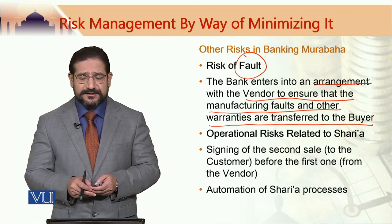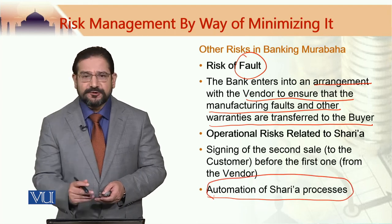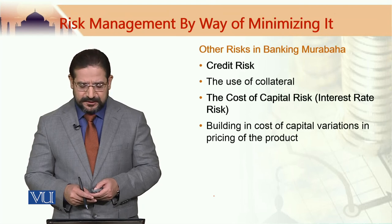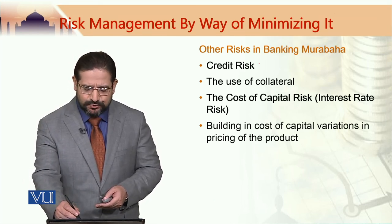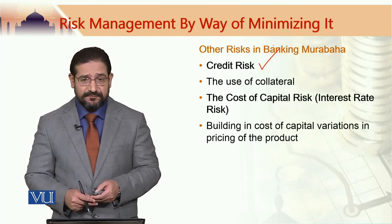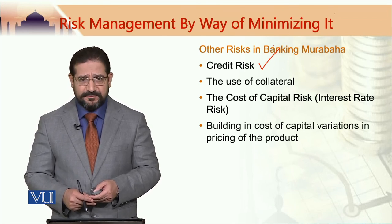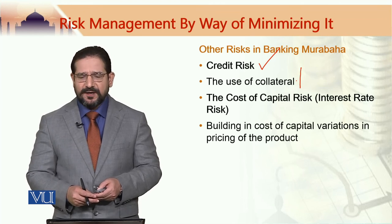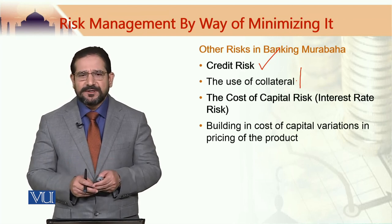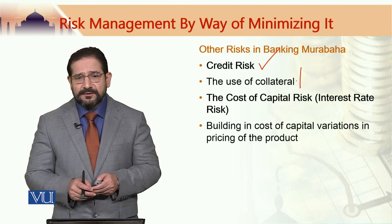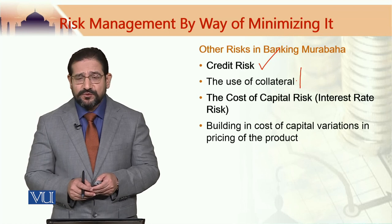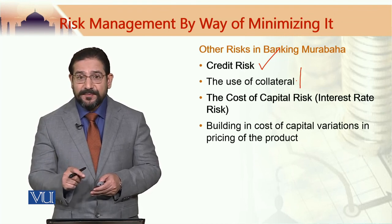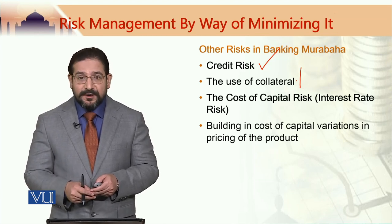To avoid this kind of risk, Islamic banks have started automating the Sharia process. There is also a credit risk involved in a banking murabaha transaction or any other financing transaction. To minimize credit risk, Islamic banks may ask for collateral — in many cases, the financed item itself is considered the collateral. There are other risks like cost of capital risk, which will be covered in detail in a later module on risk management in murabaha as a mode of financing.